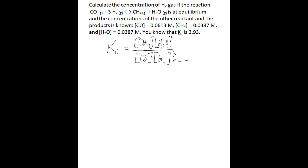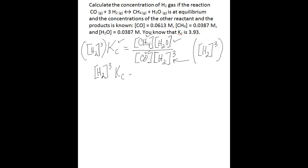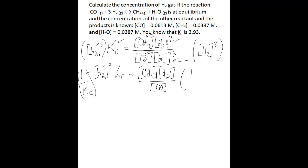Now you want to solve for the concentration of hydrogen gas, and you know the concentration of water, methane, carbon monoxide, and Kc. Solving this is a simple matter of rearranging the equation. First, multiply both sides by the concentration of hydrogen gas raised to the third power. That gives you [H₂]³ × Kc equals concentration of methane times concentration of water divided by concentration of carbon monoxide. Then multiply both sides by 1/Kc to move Kc to the right-hand side.